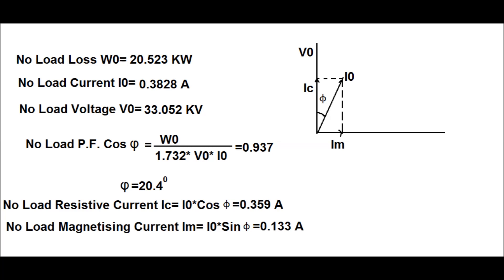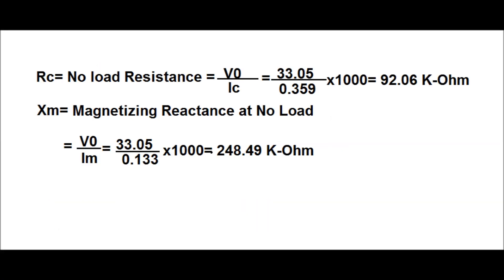The no-load resistive current is Ic = I₀ cos φ = 0.359 A, and the no-load magnetizing current is Im = I₀ sin φ = 0.133 A. From these, the no-load resistance is Rc = V₀ / Ic = 33.5 kV / 0.359 = 92.06 kΩ, and the magnetizing reactance is Xm = V₀ / Im = 33.05 kV / 0.133 = 248.49 kΩ.